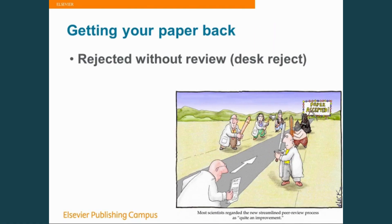There are lots of different decisions you can get, but they can broadly be broken down into these. The first, which is very common, is called desk rejects or rejected without review. This is quite common and it mainly tends to be because the paper is out of scope for the journal you've submitted it to, or because the paper is not of quite the quality that journal is looking for.